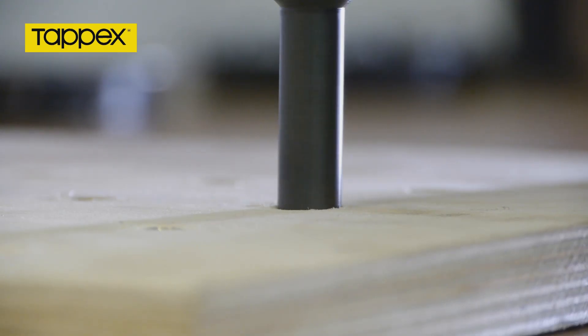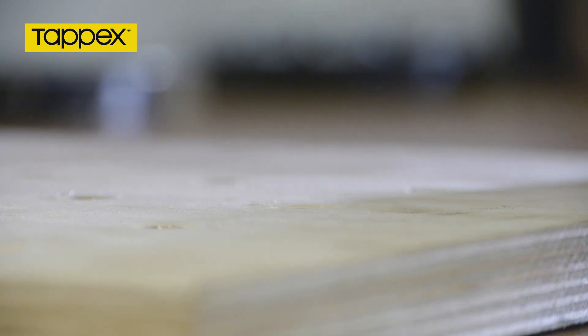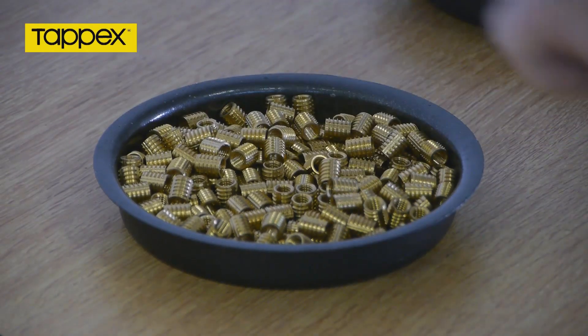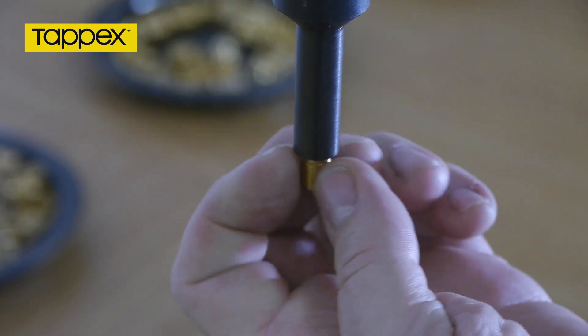Once the preset torque is reached, the screwdriver will automatically switch to reverse. Holding the trigger down until the screwdriver stops rotating, the operator can then begin to load the next insert onto the production driver.